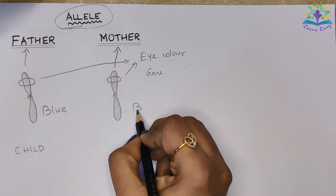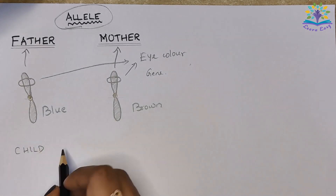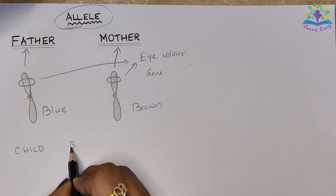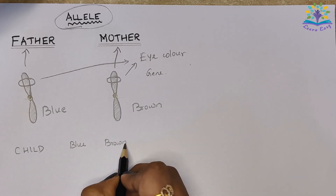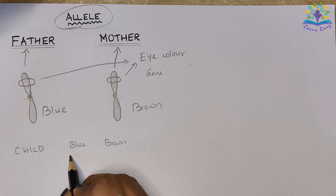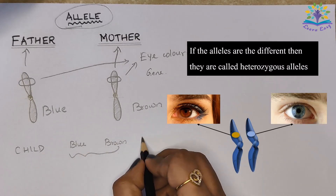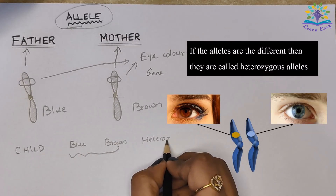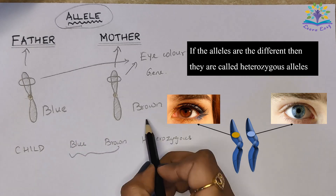If the alleles are different, then they are called heterozygous alleles. For example, if the mother has brown eyes and the father has blue eyes, then the alleles present in the child will be heterozygous.